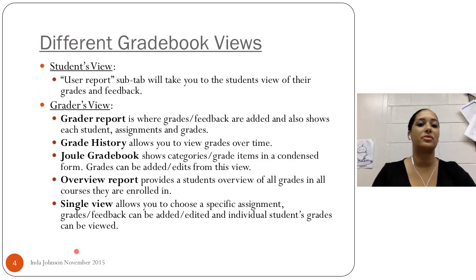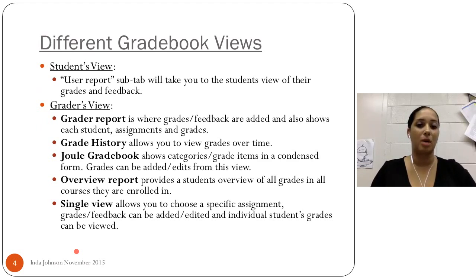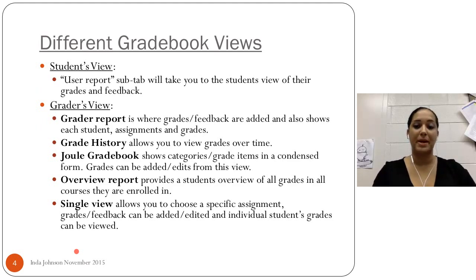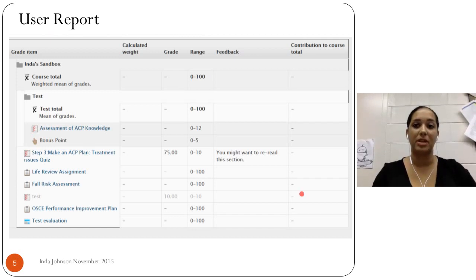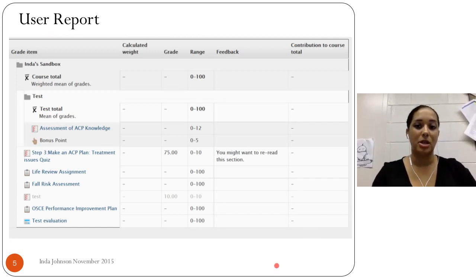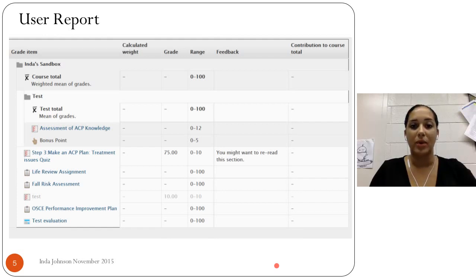Some of the gradebook views: the student's view, which is the user report. This is a sub-tab where you can see the individual student's report. I really like it because you can look and see what it looks like from that student's perspective. Here's a little glimpse of how one of ours looks. You can see what we show — we don't necessarily show a calculated weight, but we show the grade. In most courses, that's a percentage grade.